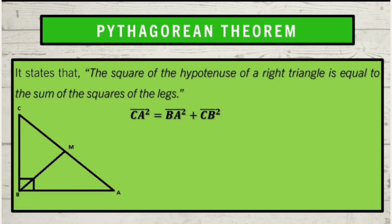We need to prove that segment CA squared is equal to segment BA squared plus segment CB squared. To do so, let us start by constructing an altitude BM. We now have three right triangles: Triangle CBA, Triangle CBM, and Triangle MBA. With the altitude BM drawn to its hypotenuse, it will be proved by using the right triangle similarity theorem, meaning the three right triangles are similar.